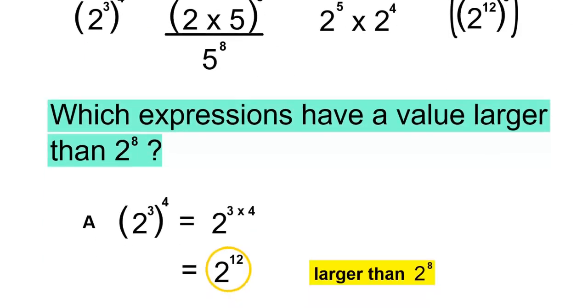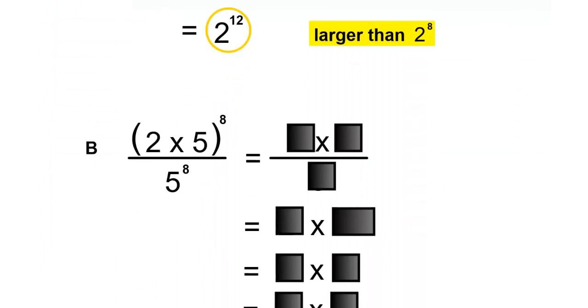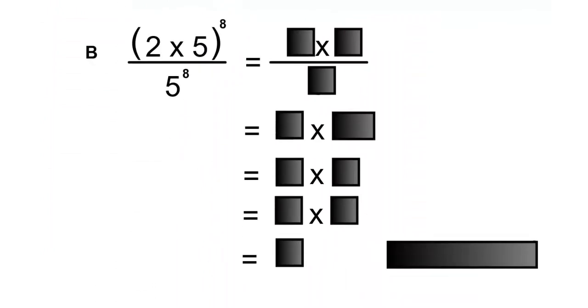Now we'll simplify B. In brackets, 2 times 5 to the power of 8, divided by 5 to the 8. 2 to the power of 8, times 5 to the power of 8, divided by 5 to the power of 8.